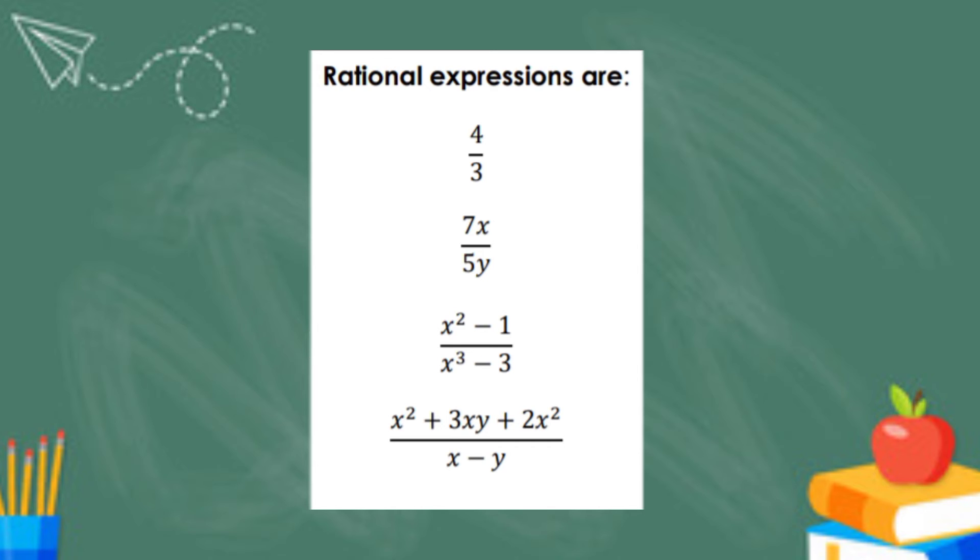And for our last example, we have x squared plus 3xy plus 2x squared all over x minus y.